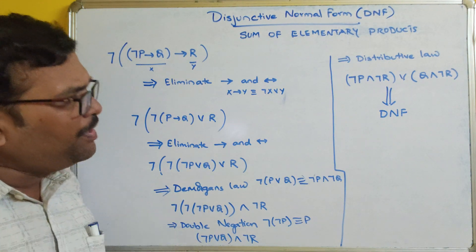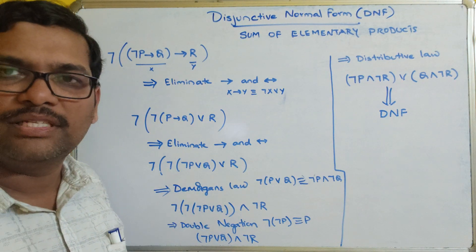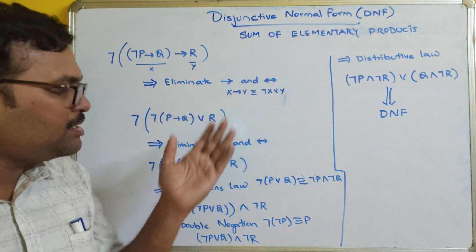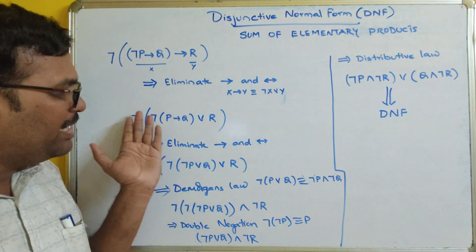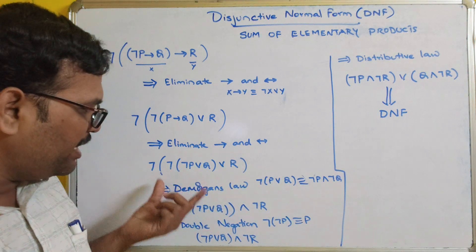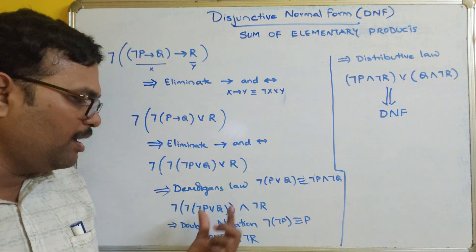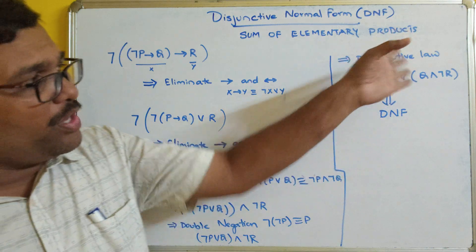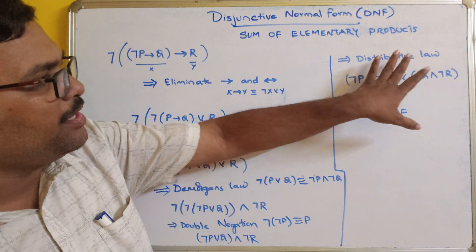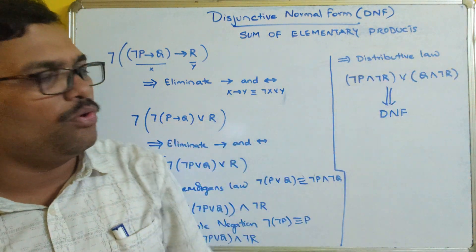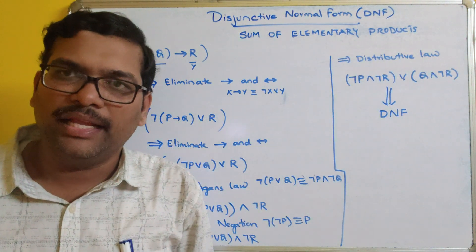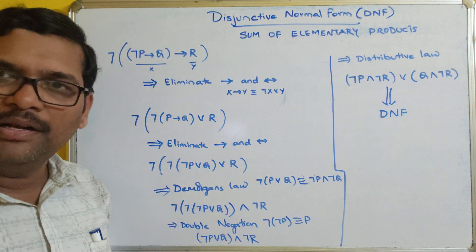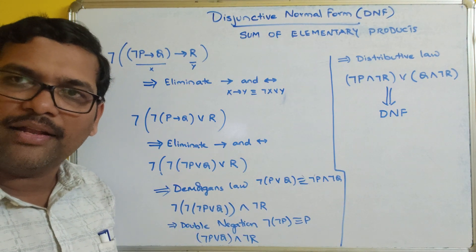Hope you understood. Simply we have to follow the steps: eliminate the implies and double implies; if there is any negation, apply De Morgan's law; then use any laws of logic; and finally, mostly you will be applying the distributive law in order to form the DNF. Let us move on to the next example for more clarity.